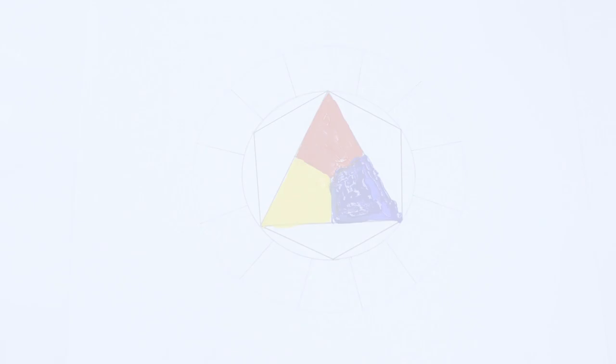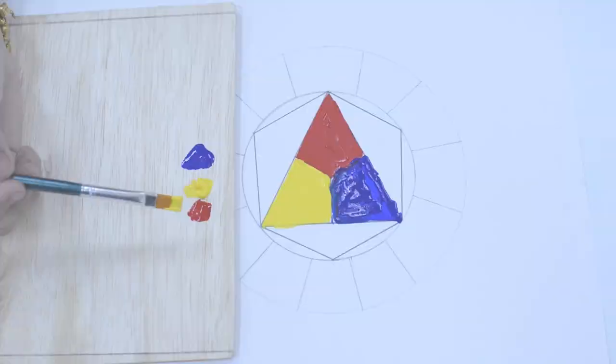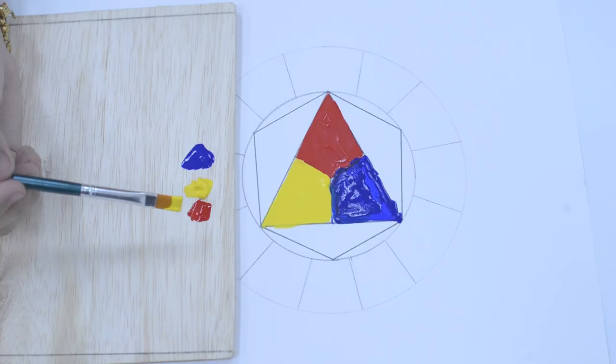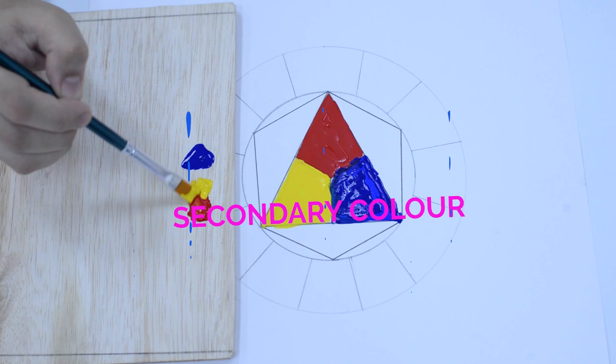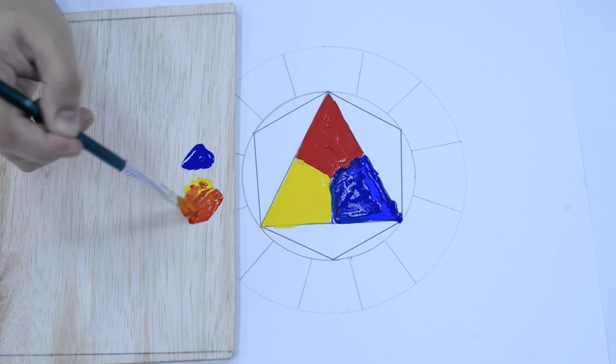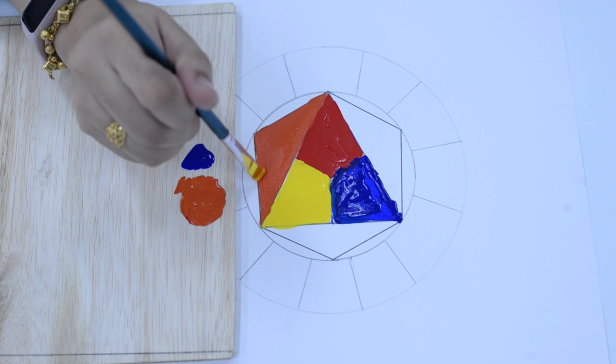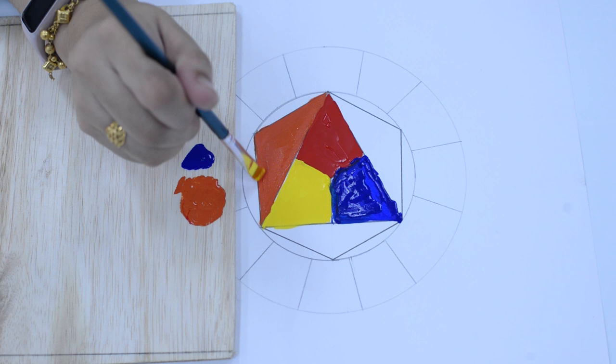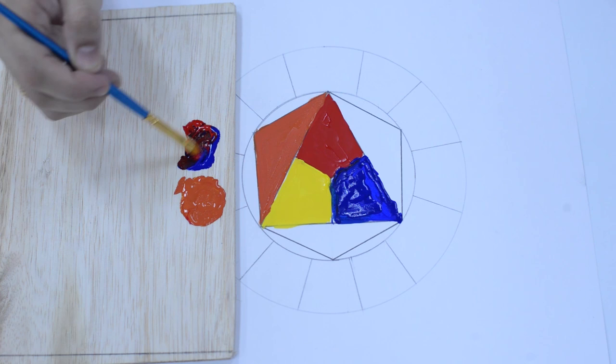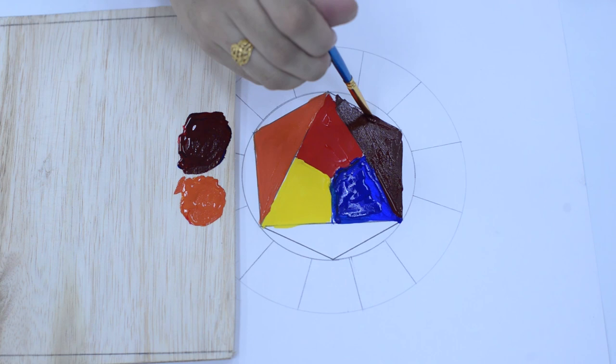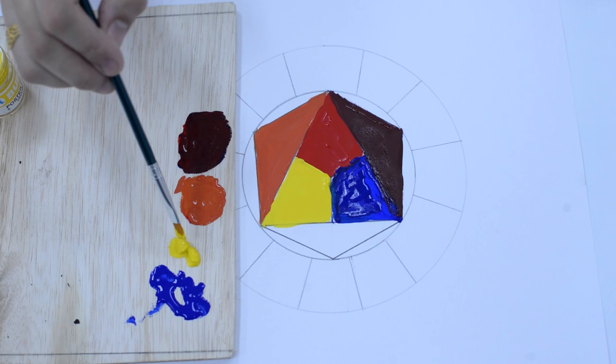Secondary color is a mixture of two neighboring primary colors. As an example, mixing red and yellow will make orange. Mixing red and blue will make purple. Last but not least, mixing yellow and blue will make green.